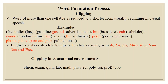Clipping is a word formation process. In clipping, a word of more than one syllable is reduced to a shorter form, beginning in casual speech. For example, words like ex, es, zed, bra, cab, fan, and flu are clipped forms of longer words. These are examples of the clipping process.